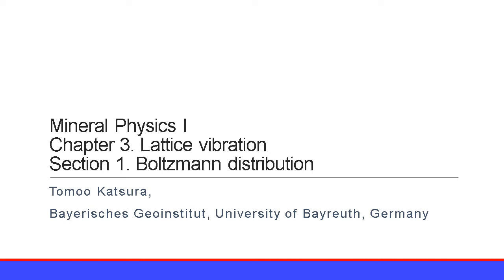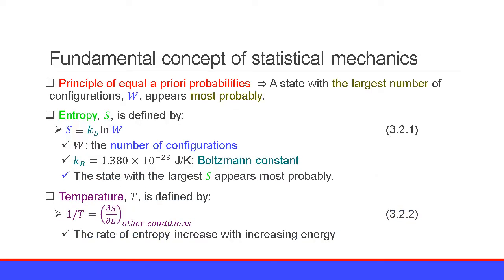Section 1 of Chapter 3, Lattice Vibration, is the Boltzmann Distribution. First, let me explain the fundamental concepts of statistical mechanics. The fundamental principle of statistical mechanics is the principle of equal a priori probabilities, which means a state with the largest number of configurations W appears most probably.